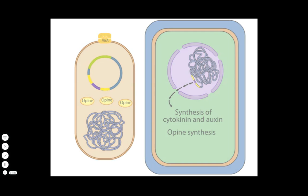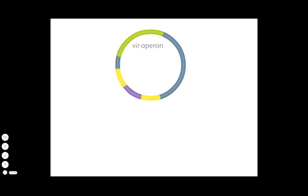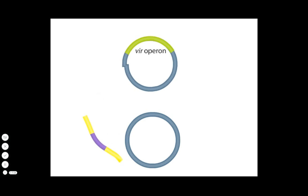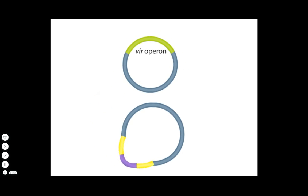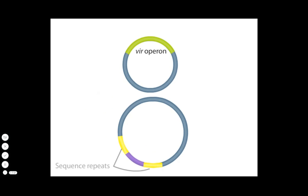Researchers employ Agrobacterium to genetically engineer a wide variety of plants. In this procedure, the tDNA is placed on another plasmid that is more easily manipulated and the DNA between the flanking sequence repeat regions is replaced with a gene of interest.